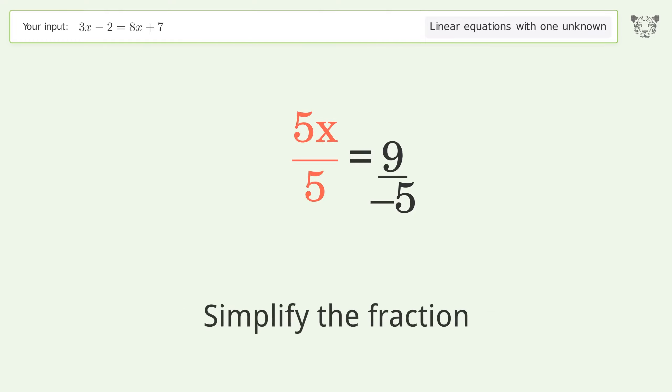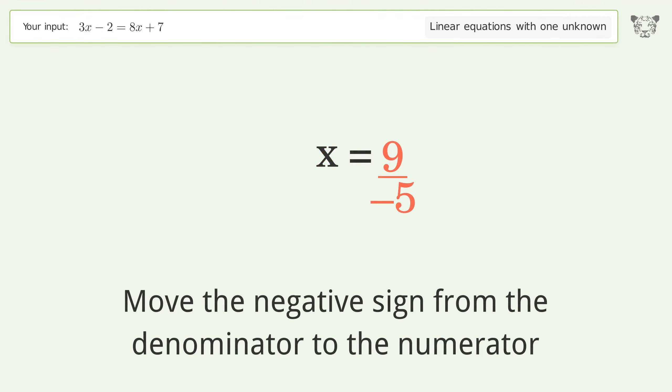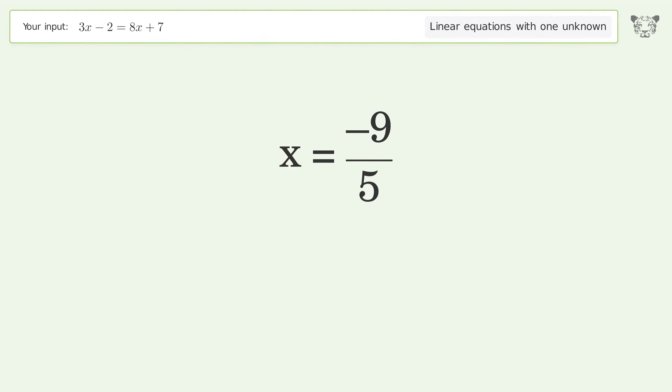Simplify the fraction. Move the negative sign from the denominator to the numerator. And so the final result is x equals negative 9 over 5.